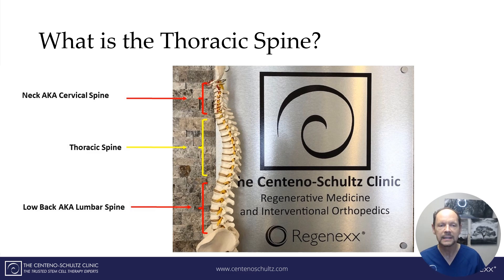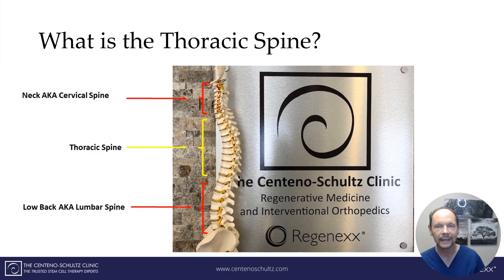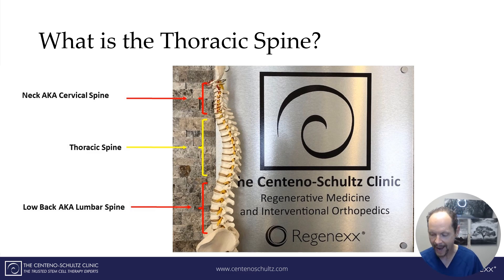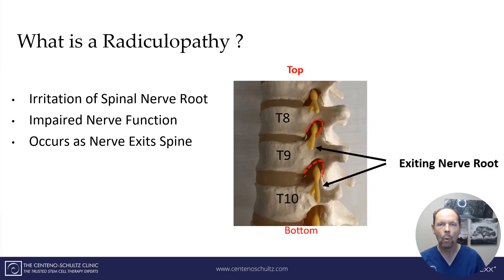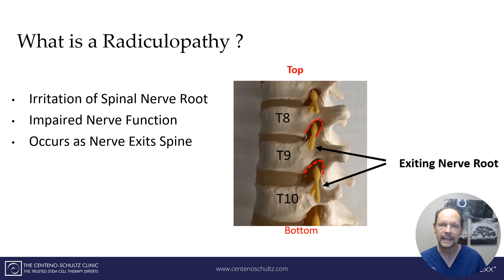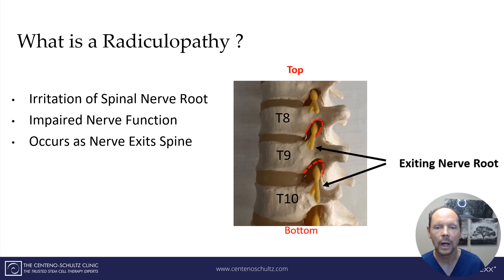So where is and what is the thoracic spine? It's that section of the spine below the neck and above the lumbar spine — sometimes referred to as the mid-back. And what is a radiculopathy? In essence it's an irritation of a spinal nerve root resulting in impaired nerve function, and it occurs at the level of the spine.